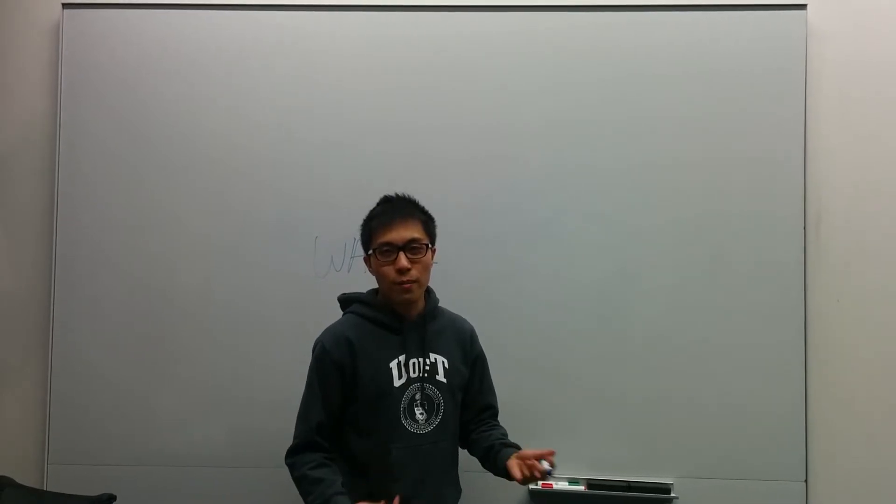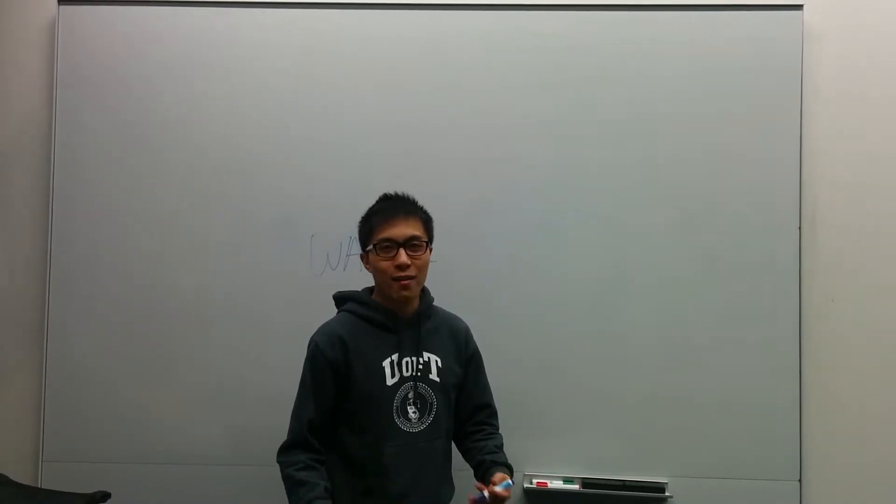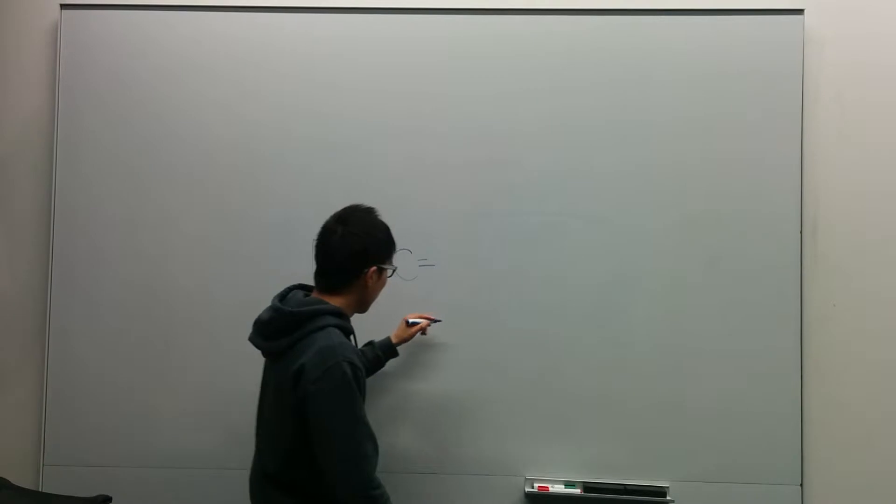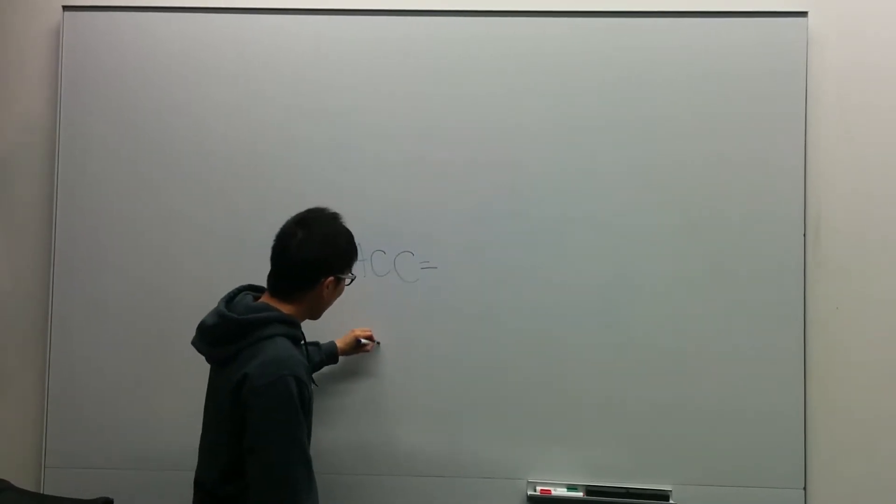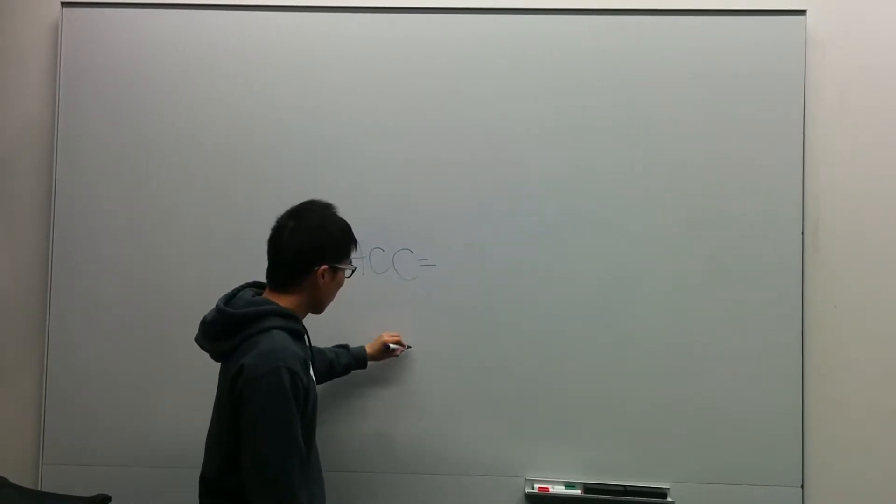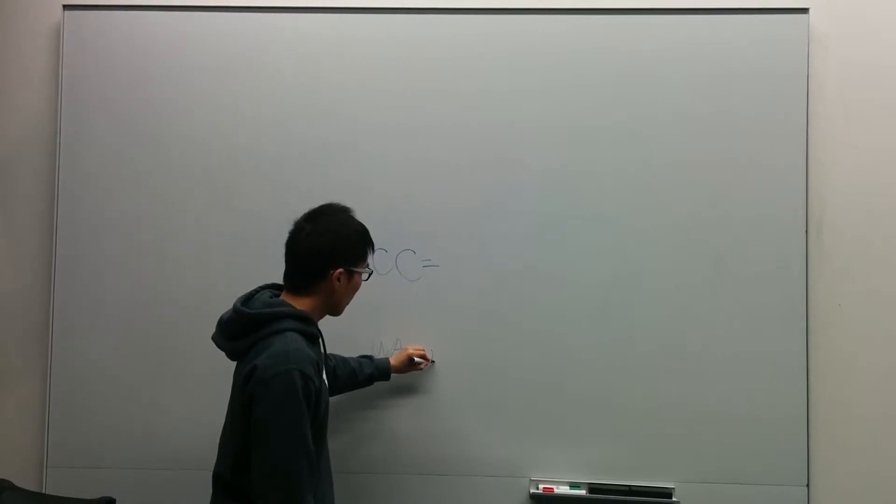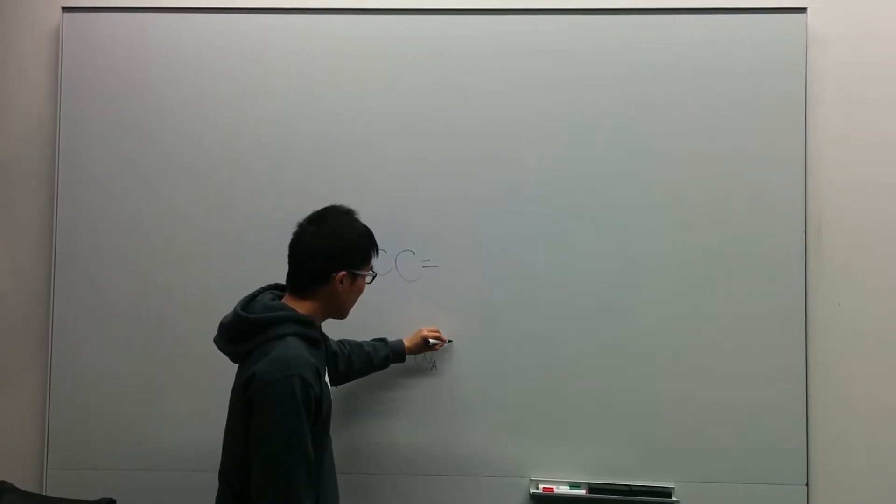So as many of you know from mathematics, when you want to take a weighted average of something, the formula is the weighting for A and then whatever the value of A is, and then the weighting for B and whatever the value for B is.